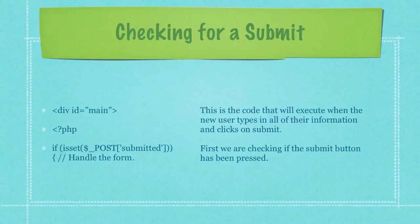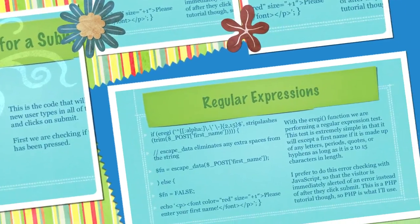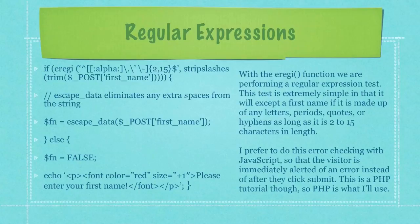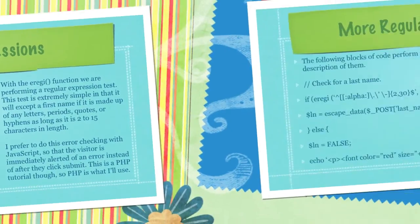This is the code that will execute when the new user types in all of their information and clicks submit. First, we're checking if the submit button has been pressed. With the EREGI function we are performing a regular expression test. This test is extremely simple in that it will accept a first name if it is made up of any letters, periods, quotes or hyphens, as long as it is 2 to 15 characters in length. I prefer to do this error checking with JavaScript so that the visitor is immediately alerted of an error instead of after they click submit, but this is a PHP tutorial so this is PHP.